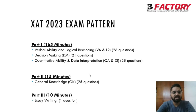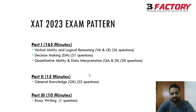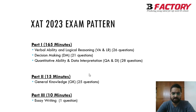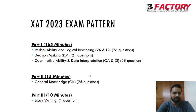The exam is divided into two or three parts. The first and most important part contains three sections: Verbal Ability, Logical Reasoning & Decision Making, and Quantitative Ability & Data Interpretation. These three sections are what determines your percentile. Parts 2 and 3 are evaluated but do not impact your percentile.